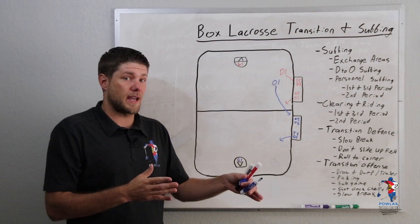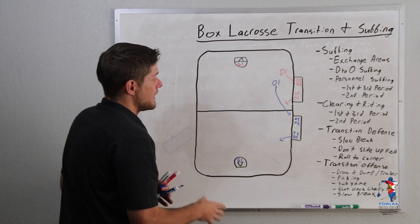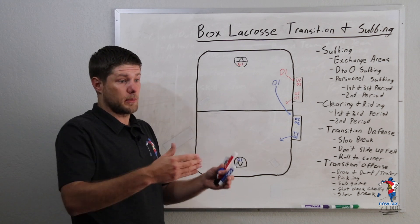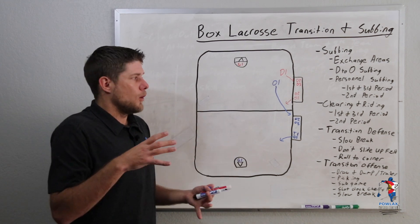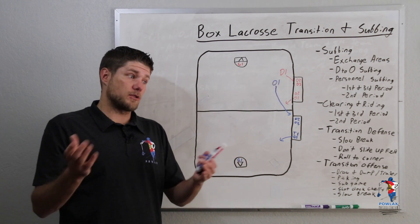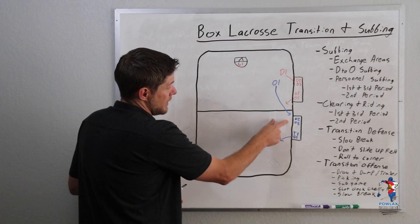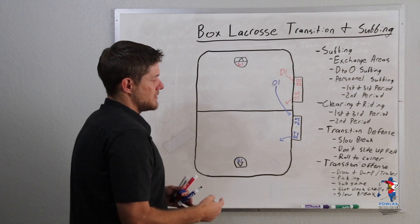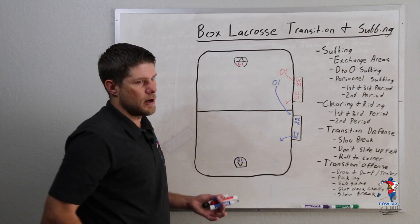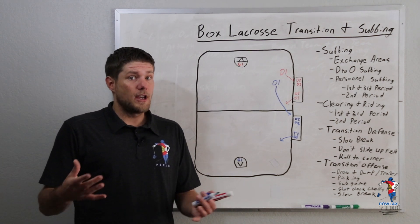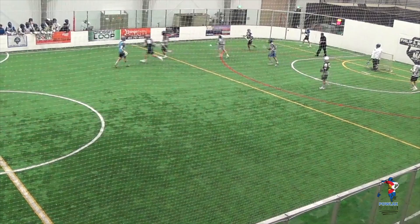Rather than having all of the players lined up towards the offensive end like we would with D-to-O subbing, we are going to have our players divided in two lines going out each door — offensive personnel going to our offensive end, and defensive personnel going to our defensive end. The big thing is making sure that players know if the ball's coming back on defense, the offensive players should get out of the way on the bench so that their players can get off the floor. In this clip, we're going to show you the personnel subbing in the first and third period.